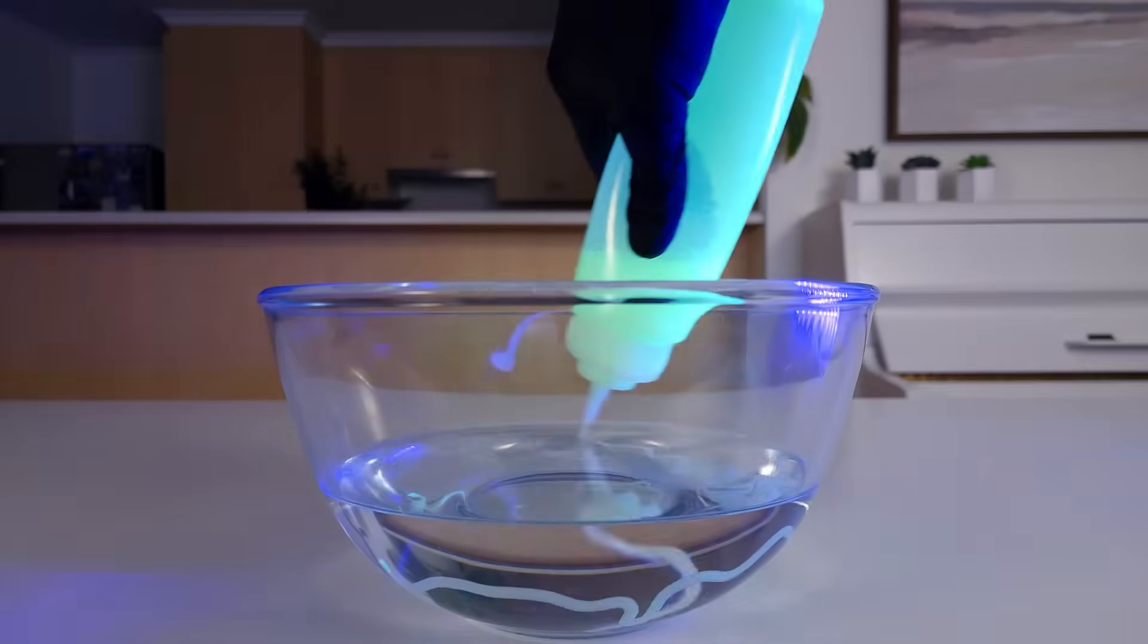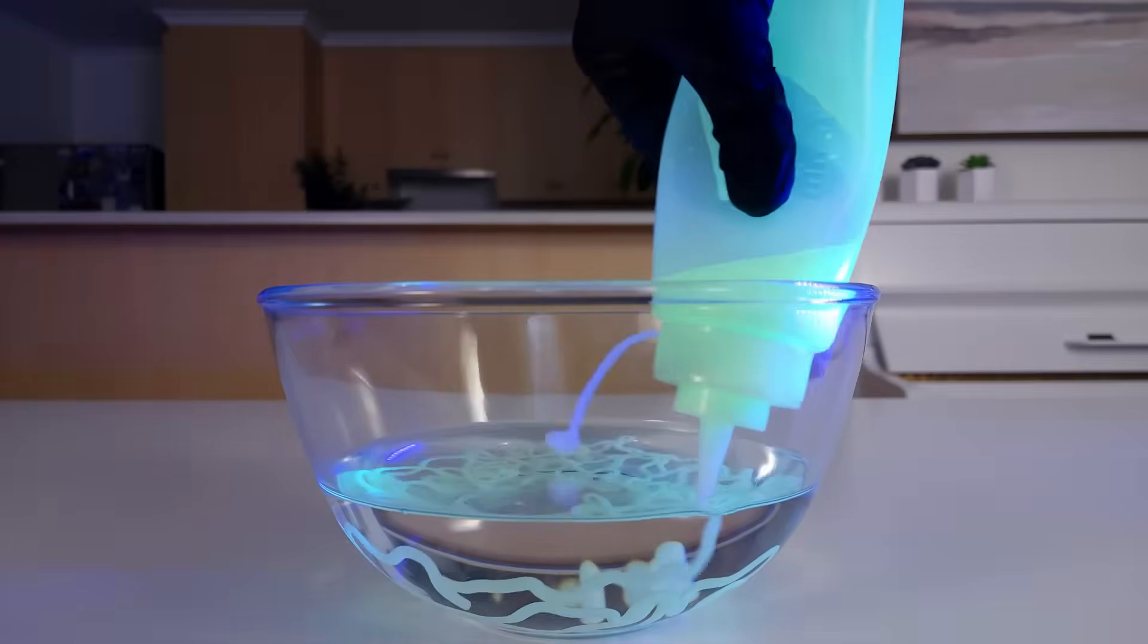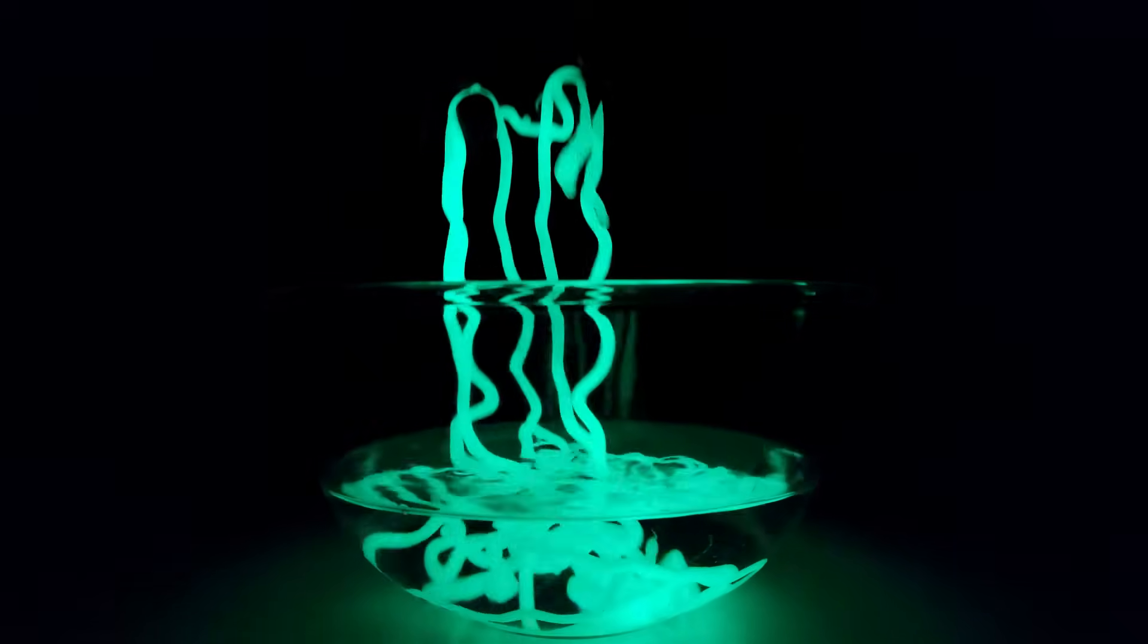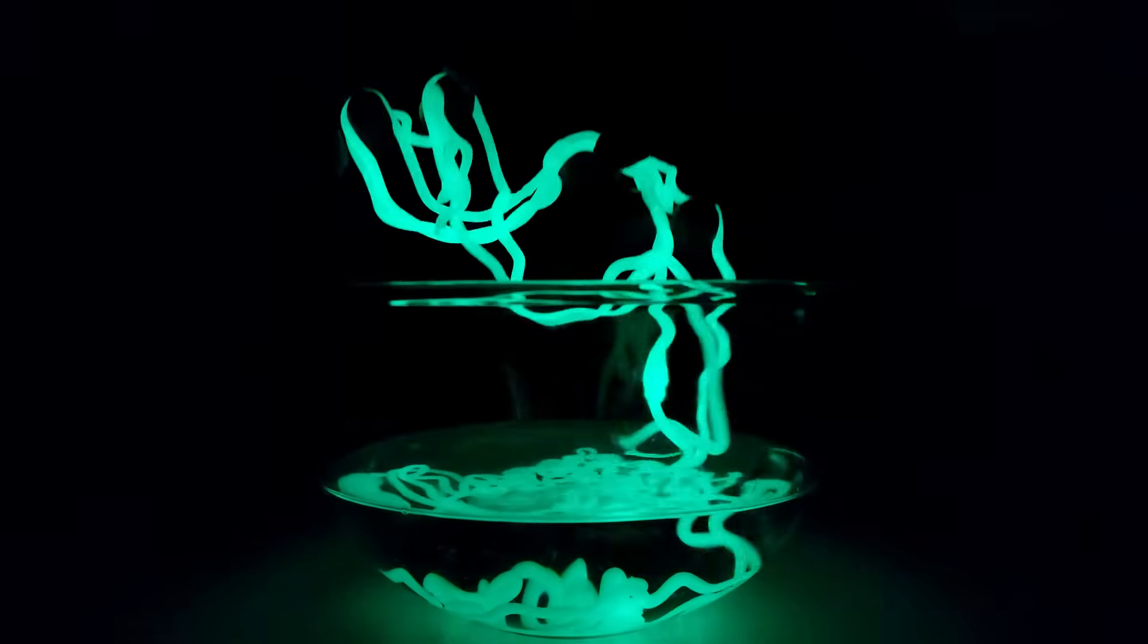To finish this video, I'm going to add one tablespoon of glow-in-the-dark powder to 500ml of sodium alginate solution. And just like before, this solution forms an instant worm as soon as it touches the calcium chloride solution. Only this time, it glows in the dark! Awesome!